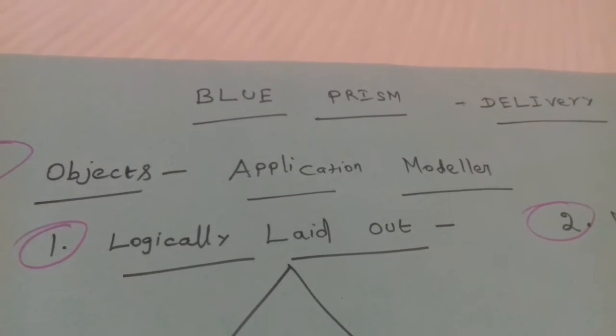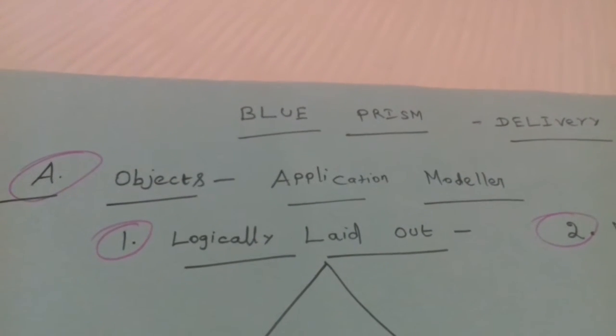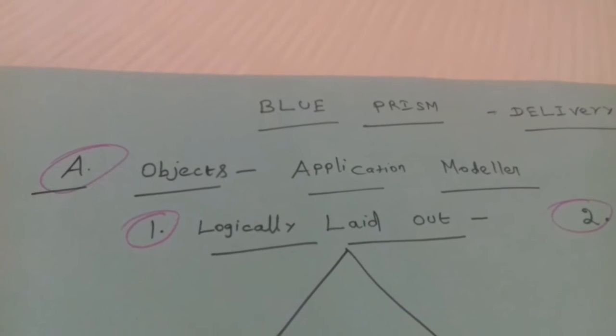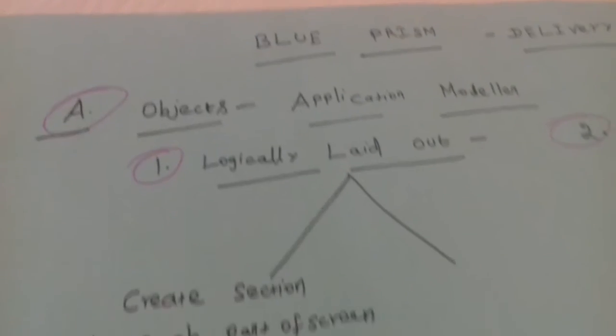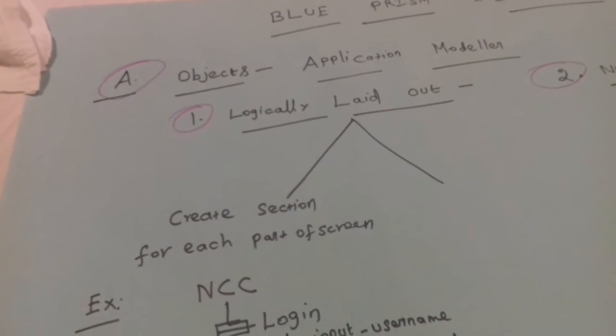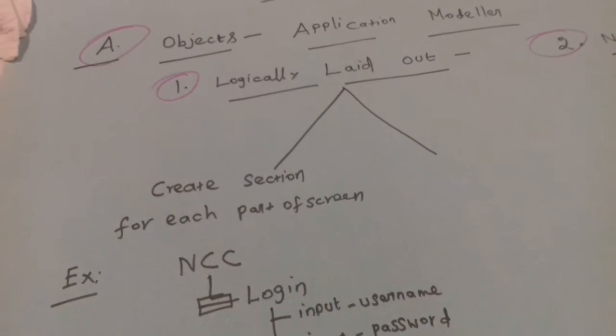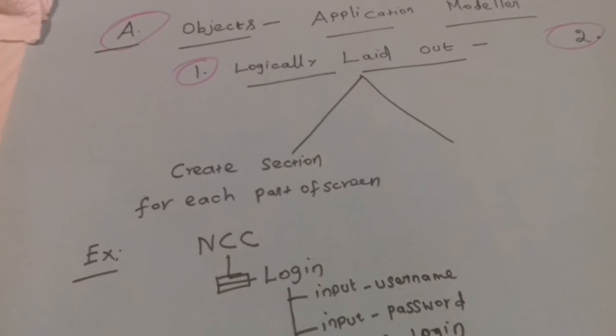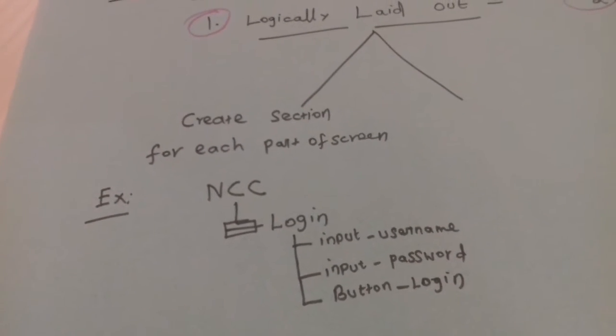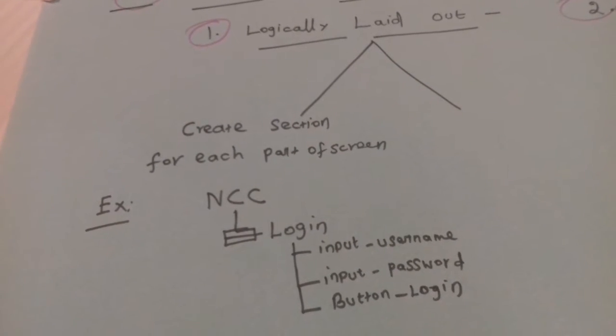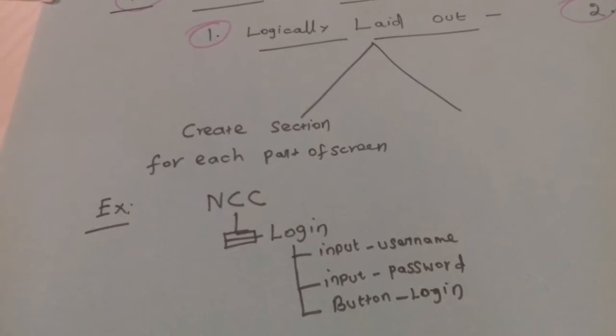We can see within the objects application modeler what things we have to cover. When you take out objects application modeler, you have to logically lay it out. It means you are going to the login screen.